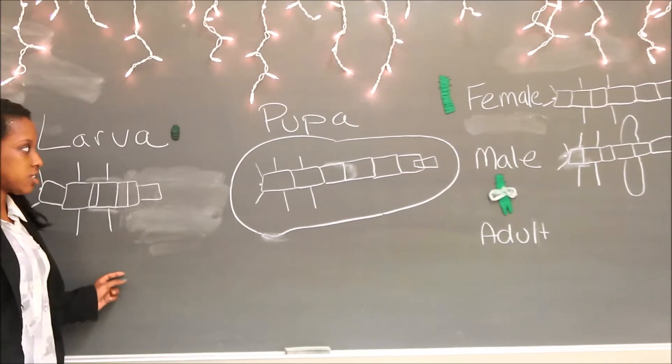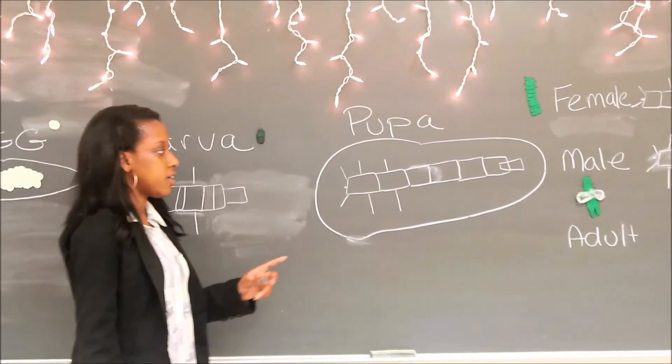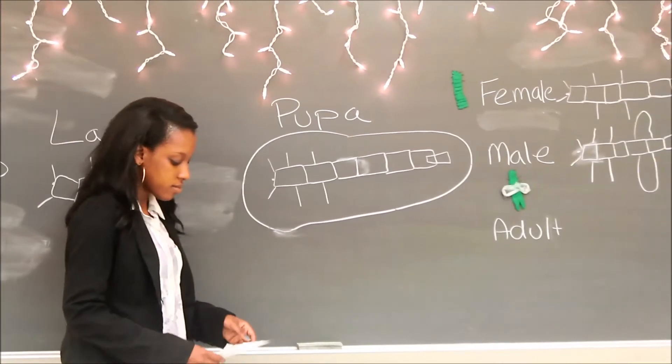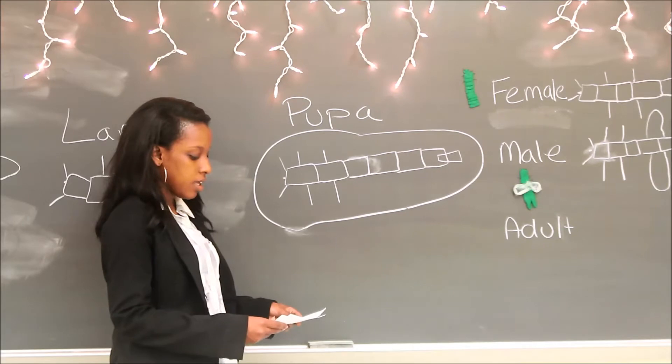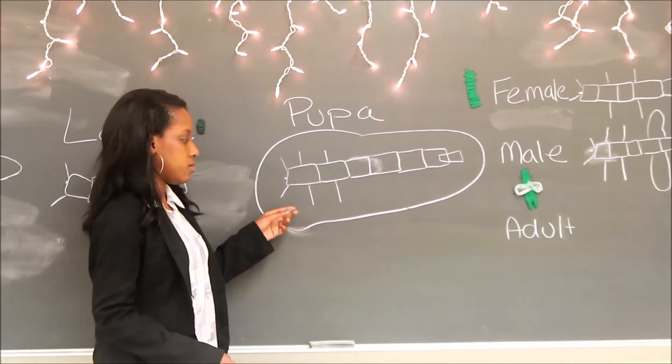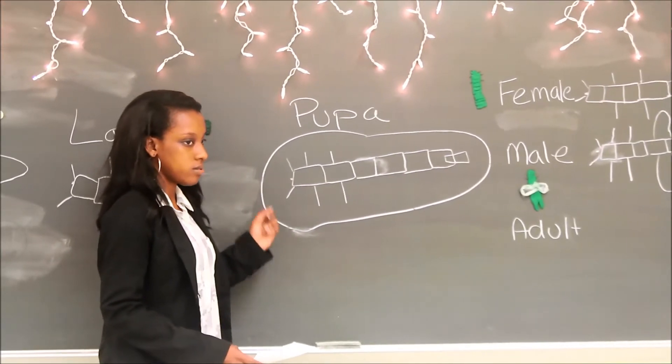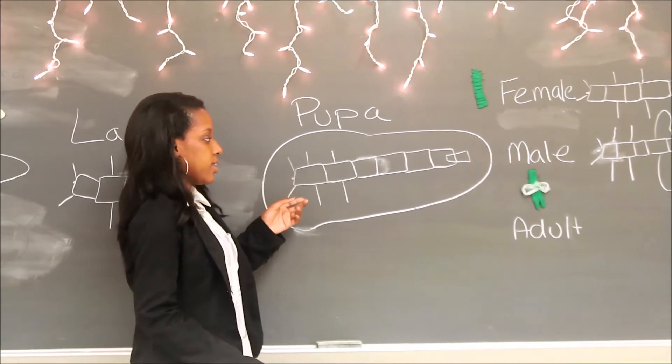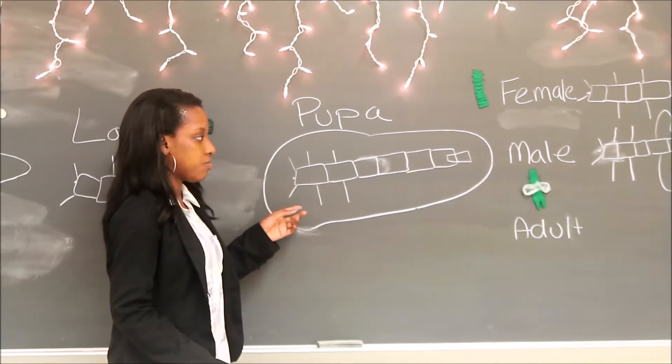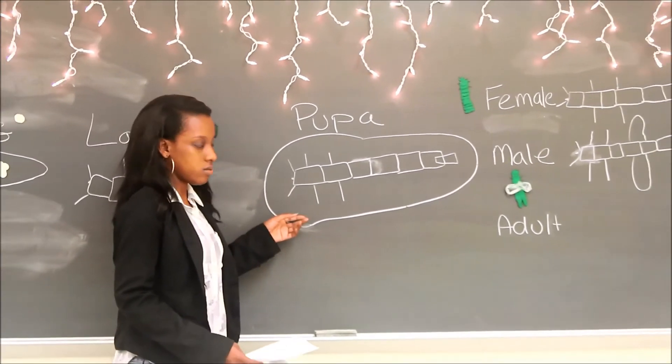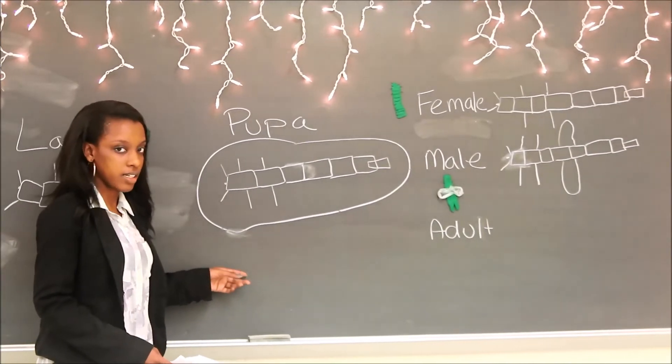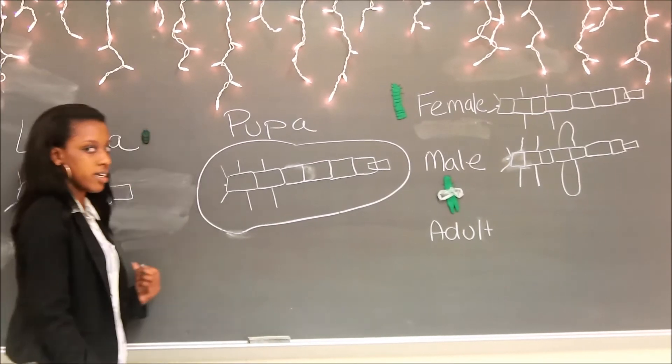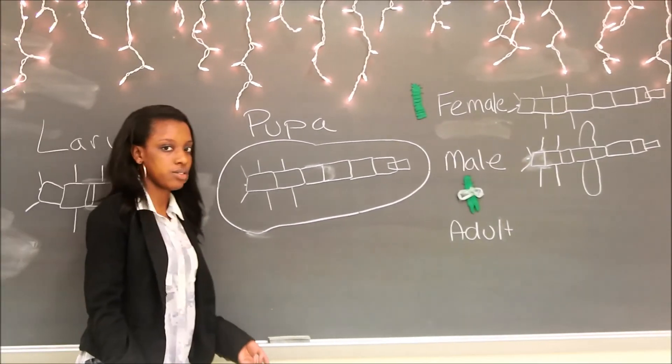After the larva stage, here's the pupa stage. During the pupa stage, most of the larvae's organs are broken down and they are forming into adults. It takes only about 11 to 15 days compared to the larva stage, which is like nine months or so.